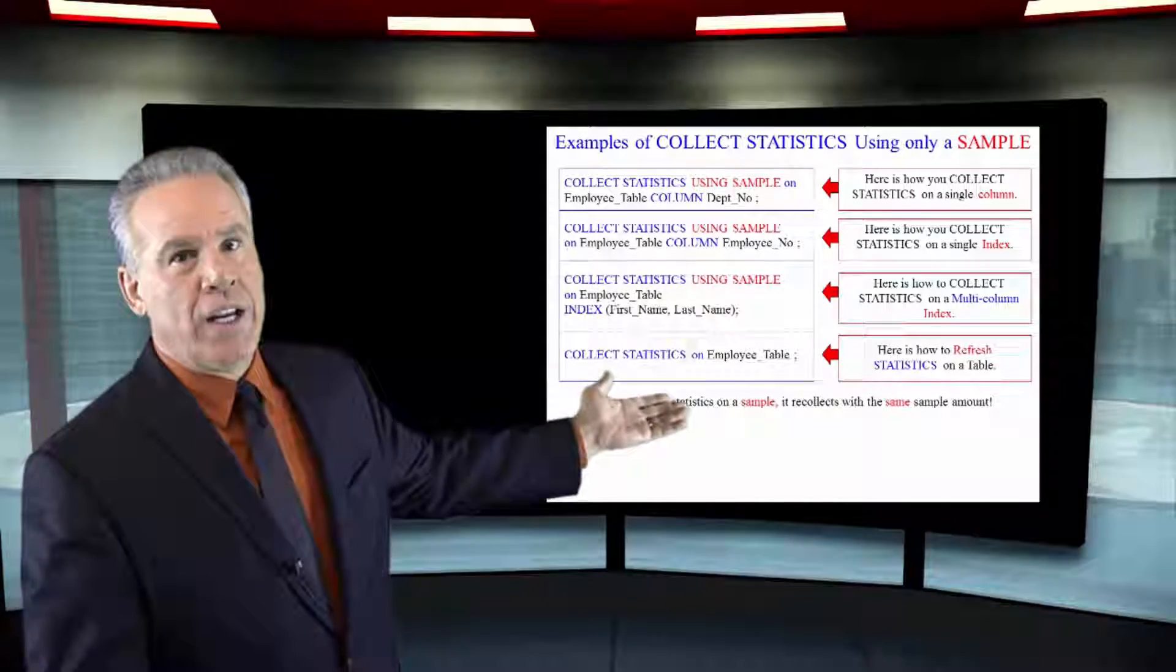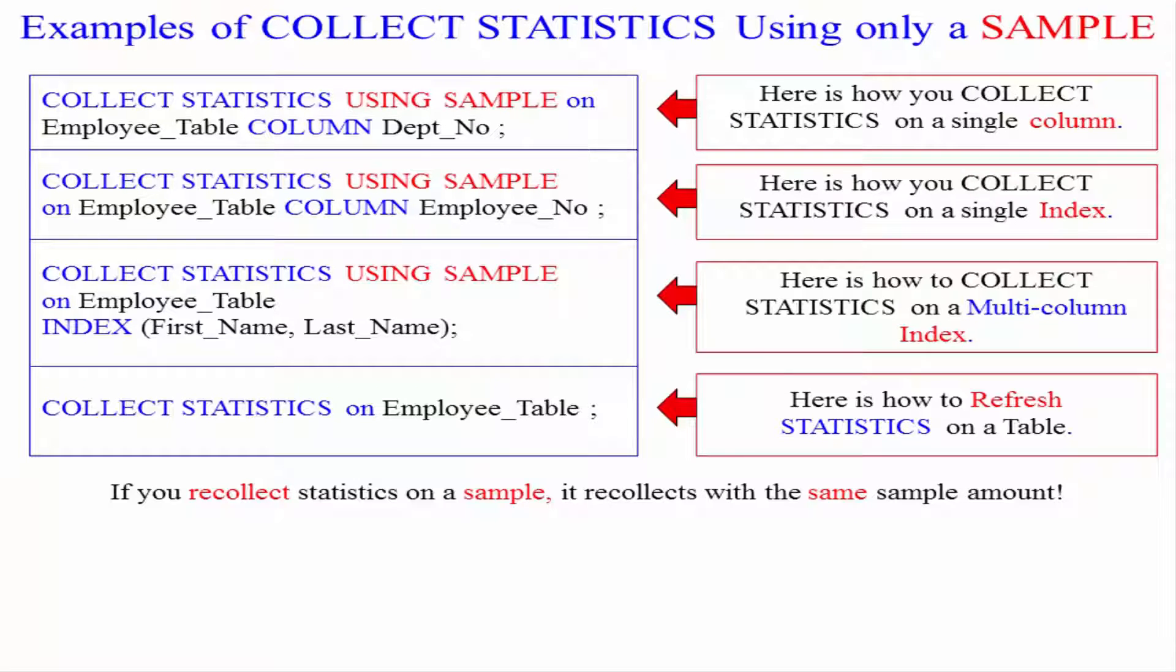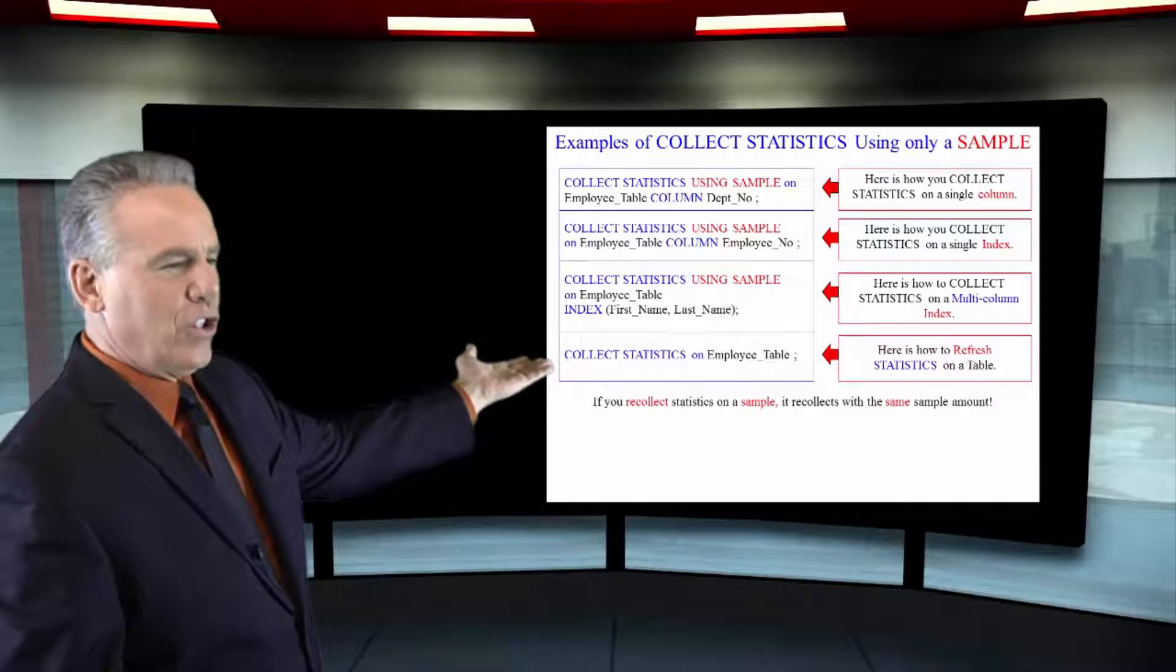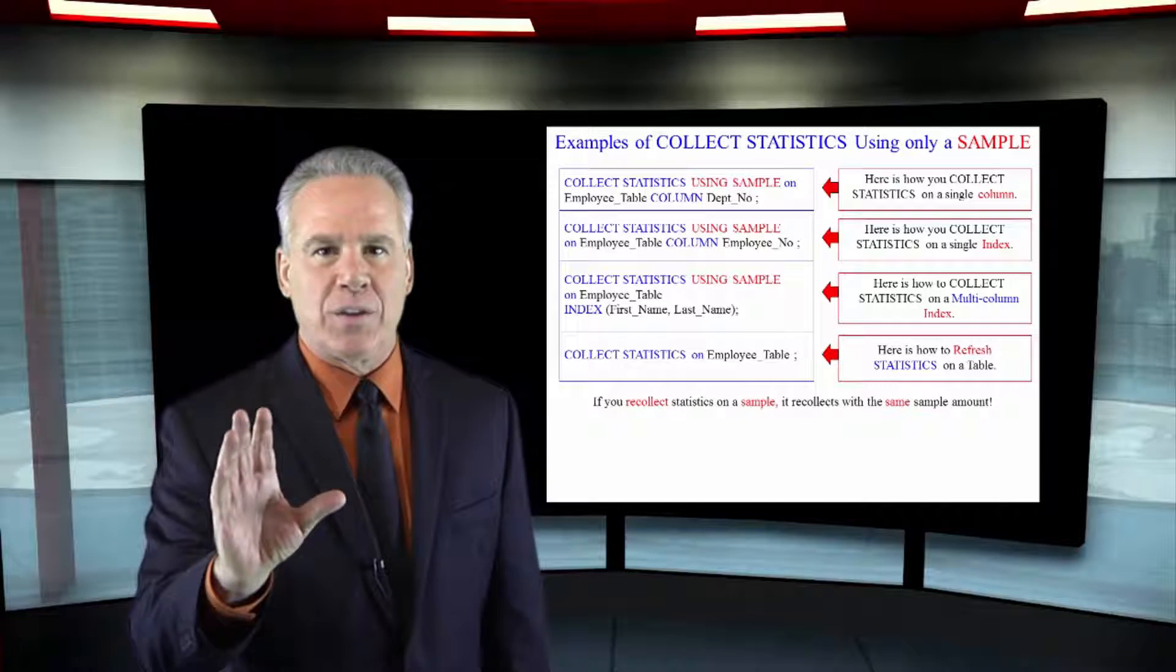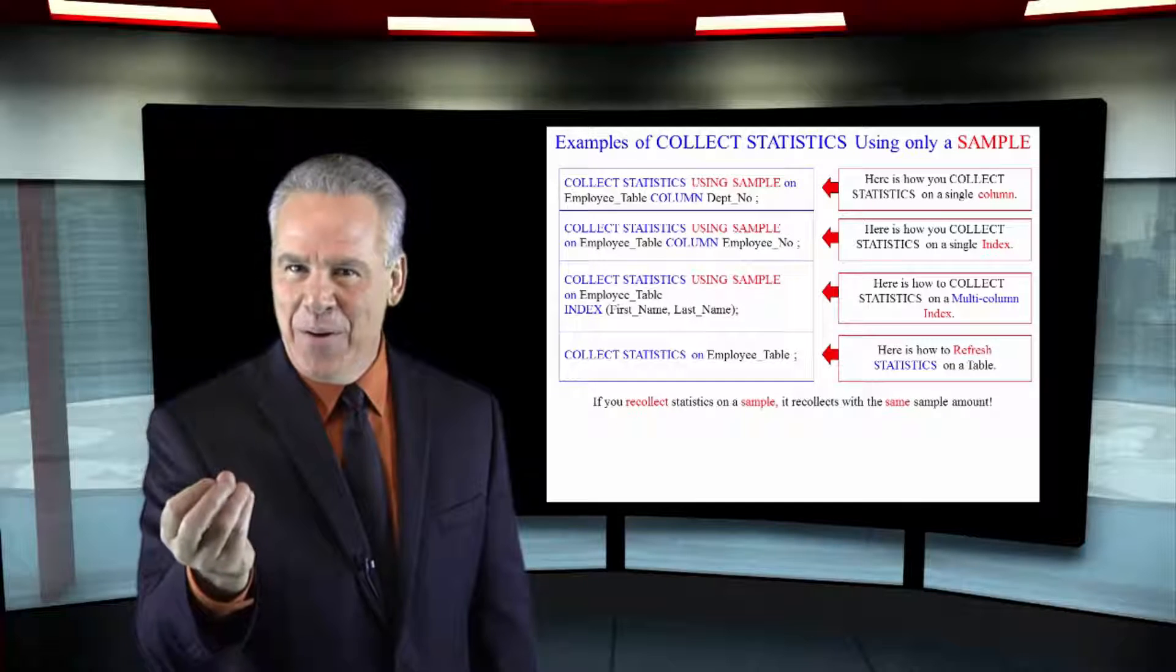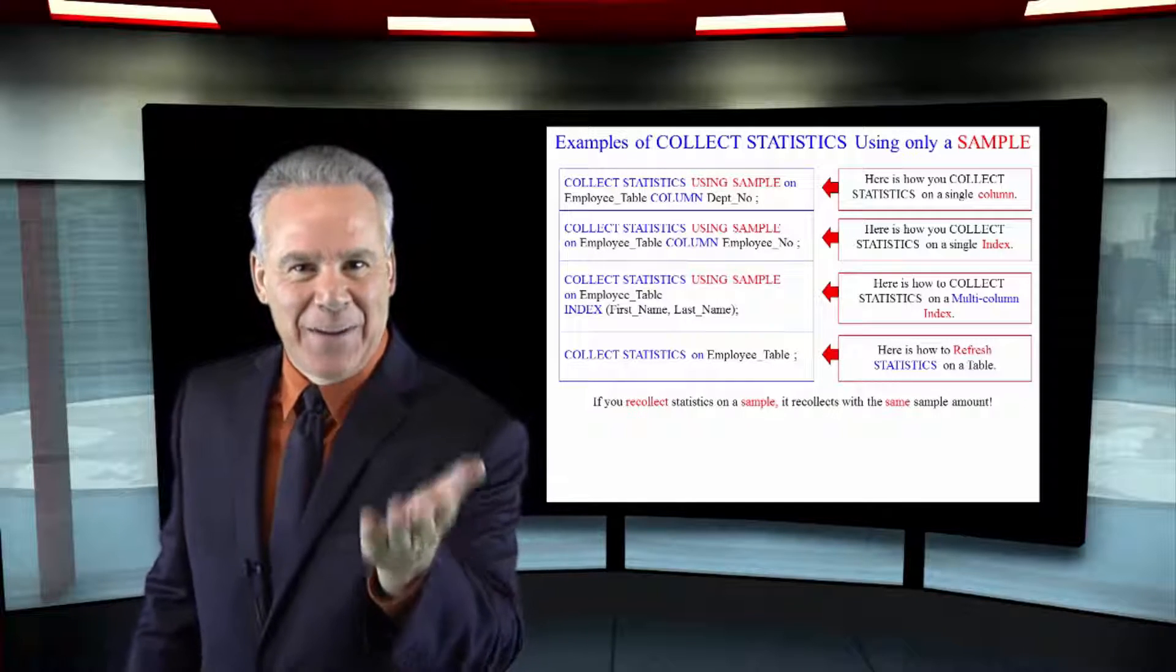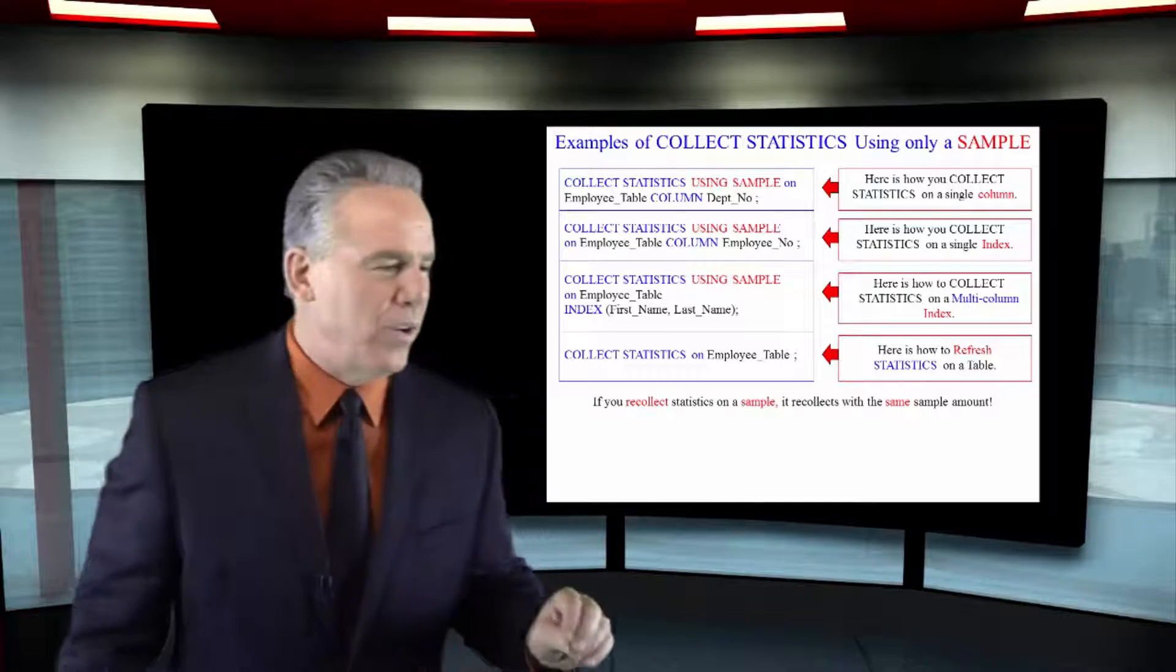Collect statistics using sample on the table column. That's going to do it on a single column. Collect statistics using sample on this table name, column employee number. It's the primary index, but we collect at the column level because it's a single column index. That's the best way to do it.